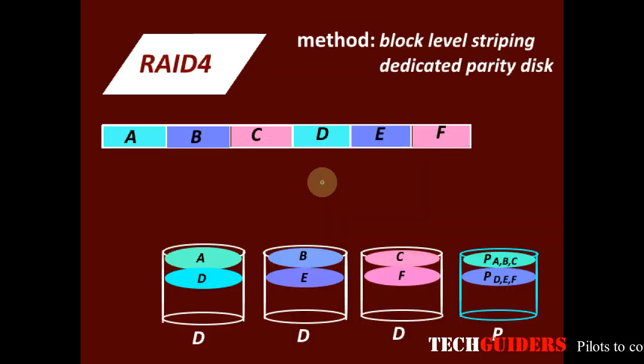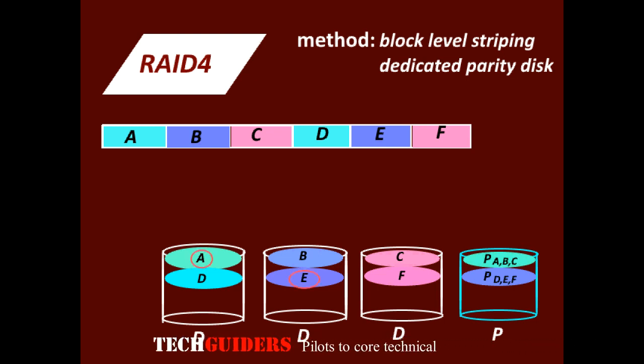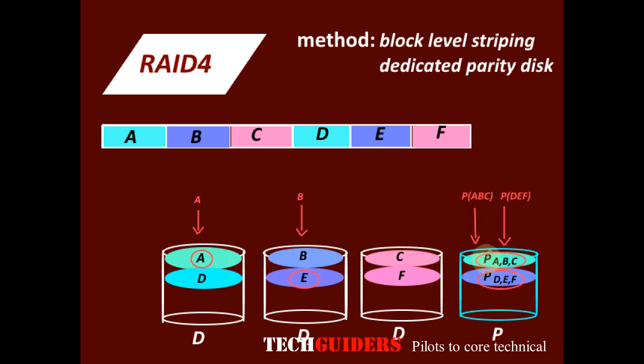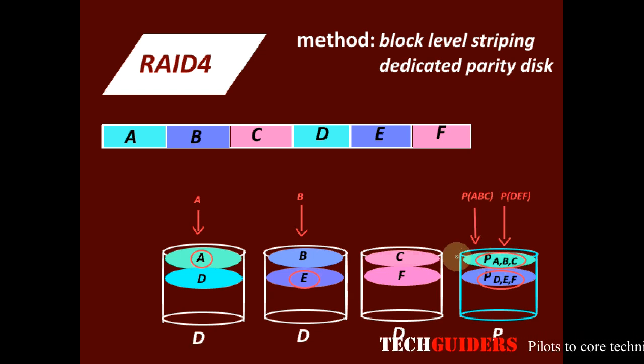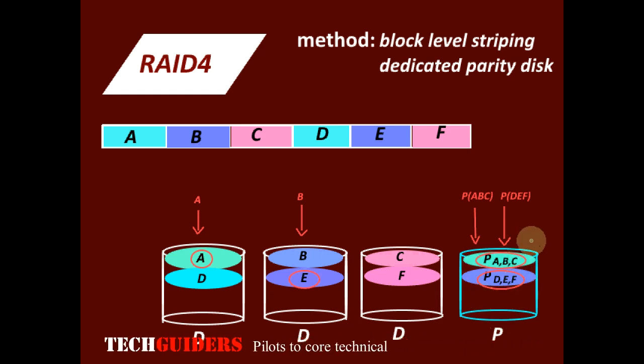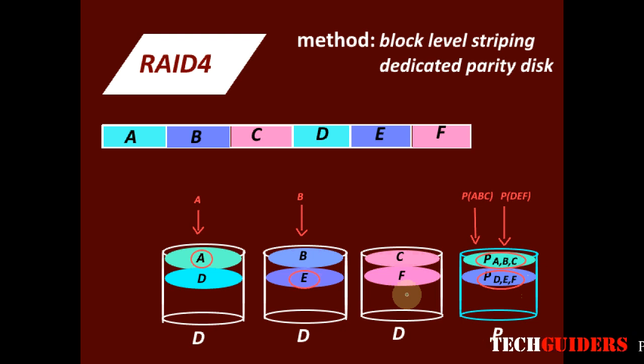Now, what about write performance? Suppose we have a write request for block A and block E. While these two blocks are written or updated, their corresponding parity blocks should also be updated. But both the parity blocks are present in the same parity disk. So if we try to execute these write requests in parallel, it will create a bottleneck in the parity disk. Thus, since we are using a dedicated parity disk, all the write operations require a write on the parity disk, causing a performance bottleneck for all the write operations. Hence, there is no improvement in the write performance.